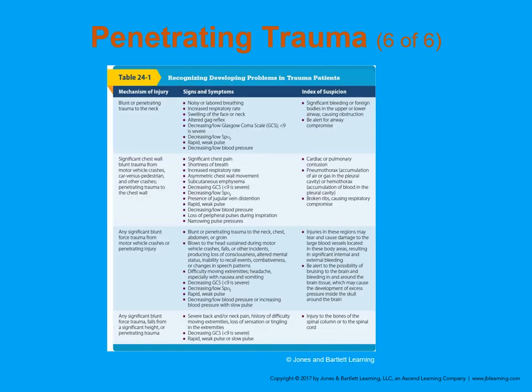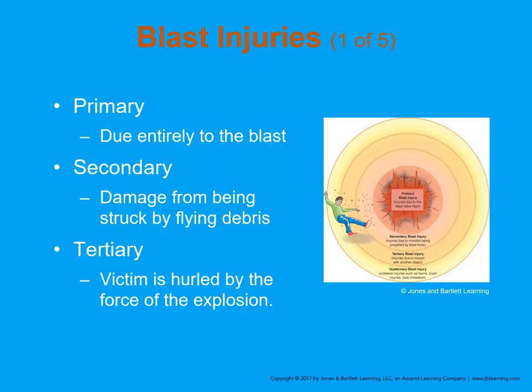There are some recognizable symptoms and signs for different significant injuries. With blast injuries, there is always an epicenter. We refer to primary injuries as those entirely in the blast zone. Secondary damage comes from being struck by flying objects and shrapnel. Tertiary damage is when a victim is hurled by the force of the explosion — they may not be struck by shrapnel, but they receive injury from the concussive forces.